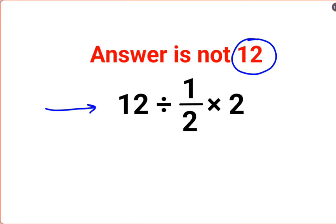Here we have 12 divided by 1/2 multiplied by 2. A lot of people think this is so easy. They think we are just left with 12 divided by 1 and the answer should be 12.